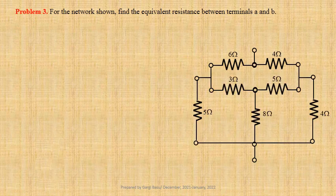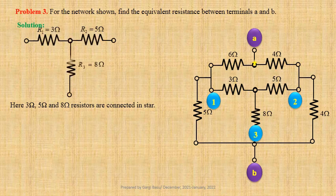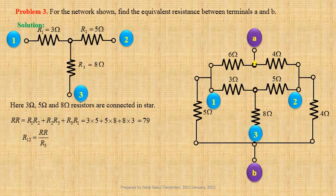For the next network, we have to determine the equivalent resistance between terminals A and B. Here 3 ohm, 5 ohm and 8 ohm resistors connected to nodes 1, 2 and 3 form a star. We shall transform this star to its equivalent delta. Let us calculate Rr equals R1 times R2 plus R2 times R3 plus R3 times R1; using values we get 3 times 5 plus 5 times 8 plus 8 times 3 equals 79. We know R12 equals Rr divided by R3; using values 79 divided by 8 equals 9.875 ohm.